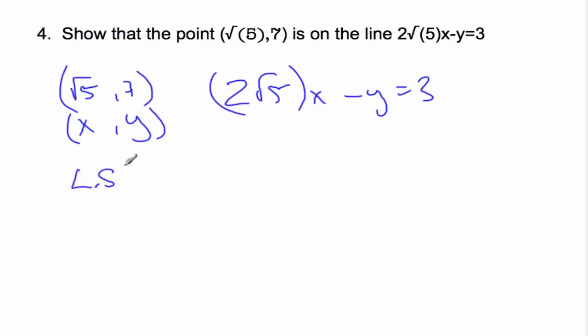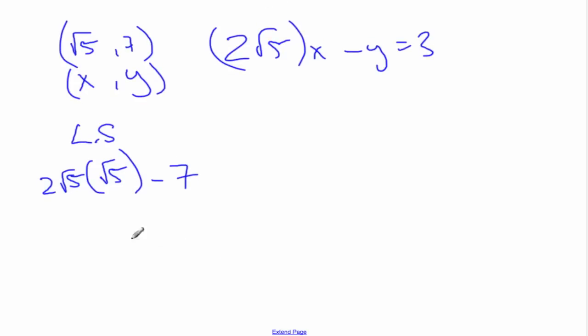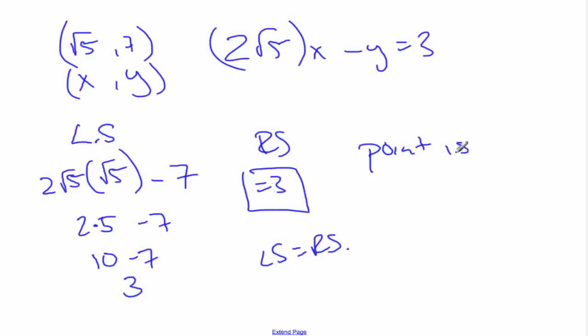So, let's look at the left side. If I plug in my points, I get 2 root 5. Plug in x is root 5. That's my x minus my y. 2 root 5 root 5 is 2 times 5, which is 10. 2 times 5 minus 7, which is 10 minus 7, which is 3. So, we know that the point is on the line. So, every point that's on the line will work. The left side will equal the right side. At any point away from the line, it's not going to work. If the left side does not equal the right side, your conclusion is the point is not on the line.